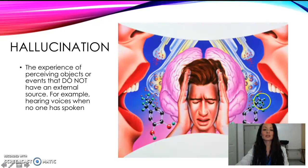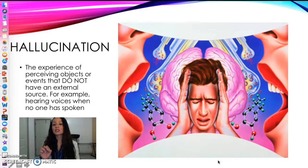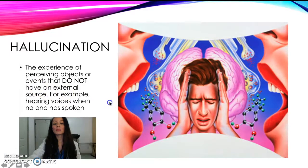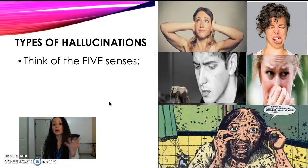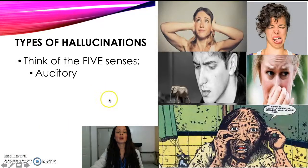A hallucination is the experience of perceiving objects or events that don't have an external source — that is a key word. There's nothing on the outside going on, but yet they're hearing something. For example, hearing voices when no one has spoken. An easy way to remember hallucination is to think of your five senses, which we learned in elementary school. If you associate things, you're more likely to remember them.